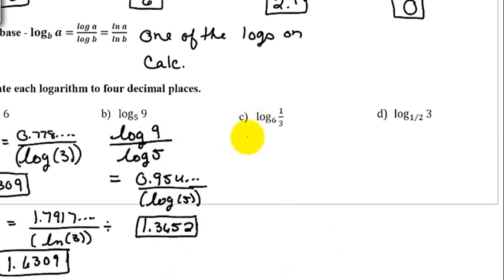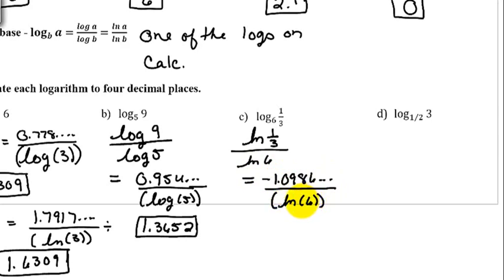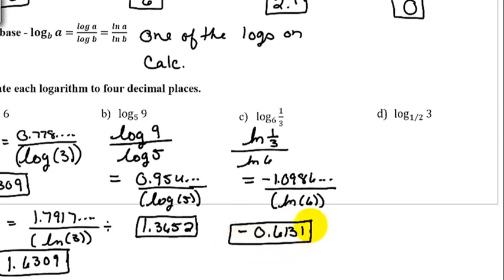For example c, we'll use natural logs: log base 6 of 1/3, which is natural log of 1/3 divided by natural log of 6. Hit the natural log key and type in 1 divided by 3. When we hit enter I get negative 1.0986 and more digits. Then divide by ln(6) in parentheses. The final answer is negative 0.6131 — the number after the 1 is a 4, so we leave the 1 alone.